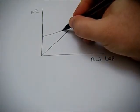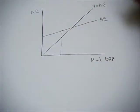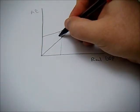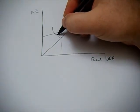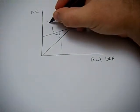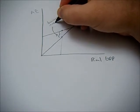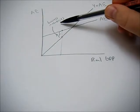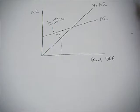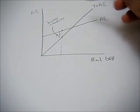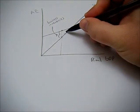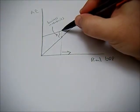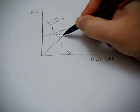Let's first imagine that aggregate expenditure is higher than real GDP. What's going on here is we're spending more in the economy than we're producing — we're buying more stuff than is being produced. In this case, business inventories drop. Businesses have inventories saved up over time, and since we're spending more than is being produced, these inventories get used up. Because these inventories are being used up, businesses want to replace them by producing more stuff, so real GDP goes up. Aggregate expenditure being greater than real GDP results in an increase in GDP.